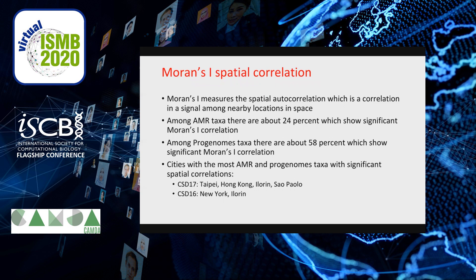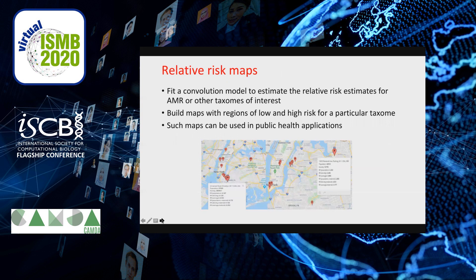For the AMR reference database, about 25% of the values show significant Moran's I correlation. For the ProGenome database, which is larger and has more annotated bacterial data, about 58% show significant correlations. For certain cities classified for year 2017, these are Taipei, Hong Kong, Eilorin, and São Paulo; and for 2016, New York and Eilorin.